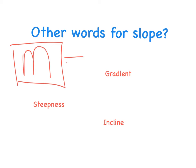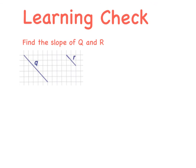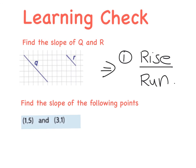So your first learning check tonight is to find the slope of Q and R—and obviously these are on graphs—and this would be the first method, Method 1, which is rise over run.